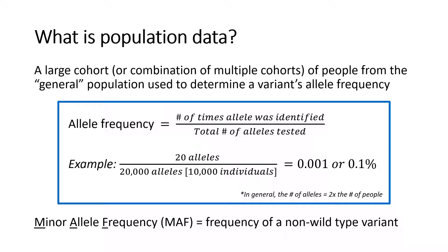The variant frequency is referred to as allele frequency, which simply means the number of times that variant, or allele, was identified, divided by the total number of alleles, or chromosomes, tested. For example, if the variant has been seen as heterozygous in 20 individuals, or 20 alleles, out of 10,000 individuals tested, or 20,000 chromosomes, the allele frequency is 0.1%. If the variant is uncommon, this frequency can also be referred to as the minor allele frequency, or MAF.